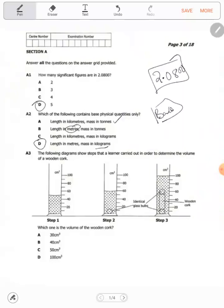Question three: the following diagram shows the steps that Elena carried out in order to determine the volume of the wooden cork. Which one is the volume of the wooden cork? Now we have the initial volume here at 50, you can see. Then after they have put a glass bulb, the volume raises to 60. Now take note: they have only put one there, they haven't put two.